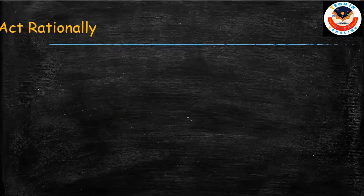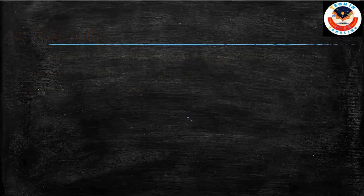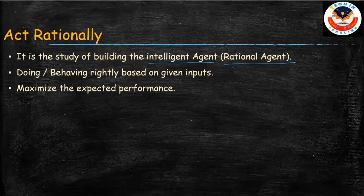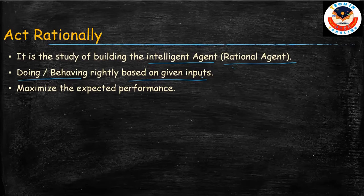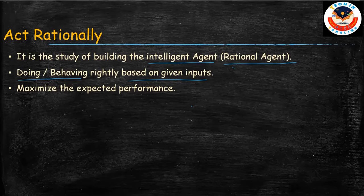The last category is acting rationally, which is about building an intelligent agent, also called a rational agent. The entire AI subject largely depends on acting rationally. We will be looking at what an intelligent agent is in the coming videos. An intelligent agent behaves correctly based on the given input, and it tries to maximize the expected performance of its respective job or task — that is what acting rationally means.